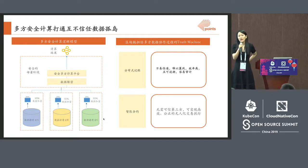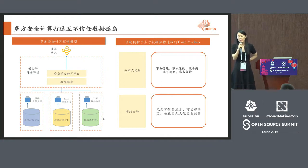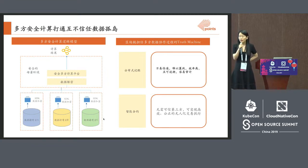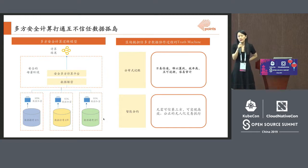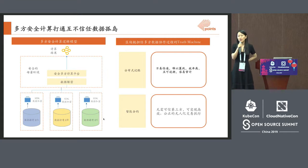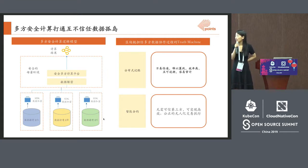As my colleague also discussed before, safe computing has a roadmap of technology, basically covering two parts. One is based on TEE hardware, and on top of that we have software. The other is algorithm encryption. What we take is based on the hardware TEE, the trusted secure enclave, and the software-based path.